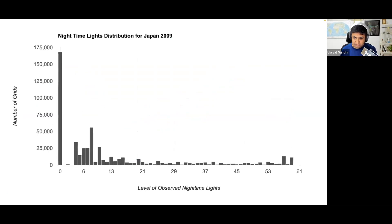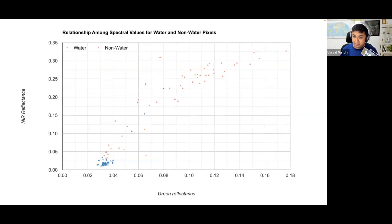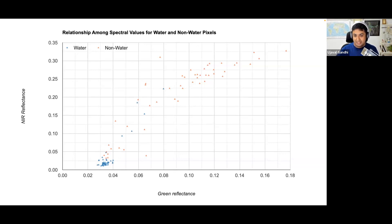In module two, we'll work with image charts. Histograms are useful to understand data distribution — for example, showing the nightlights distribution in a particular region. Scatter plots are super helpful to understand how different variables correlate with each other, such as when you're building a machine learning model and want to know if two variables have a linear or non-linear relationship. We can also differentiate between different classes, showing the reflectance of green and NIR between water and non-water pixels, so you can see where each class clusters.